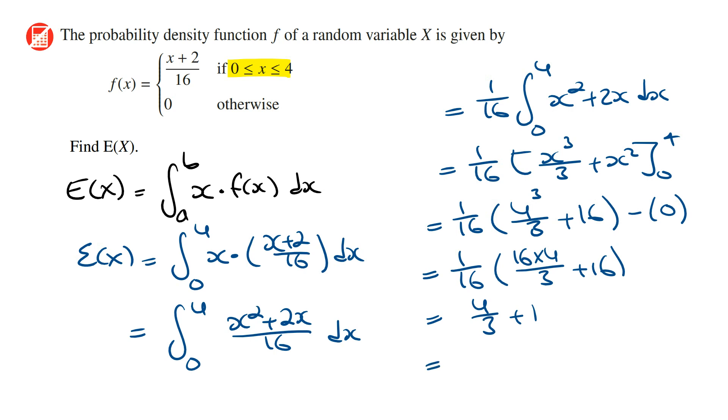And so simplifying this, 4 on 3 plus 1 is going to equal 7 on 3. And so the expected value is going to be 7 on 3. And that's it for this question.